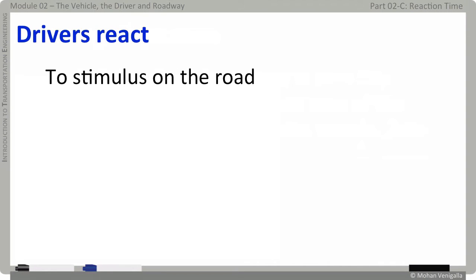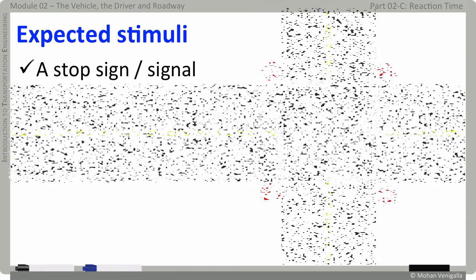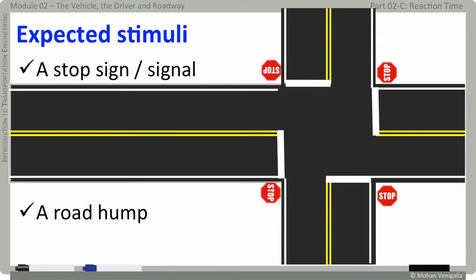Drivers react to stimulus on the road which can be expected stimulus or unexpected stimulus. The reaction to both stimuli needs to be considered in design. What is an expected stimulus? Here are some examples: a stop sign or a signal, a road hump, basically everything that is known to exist or visible to the driver.